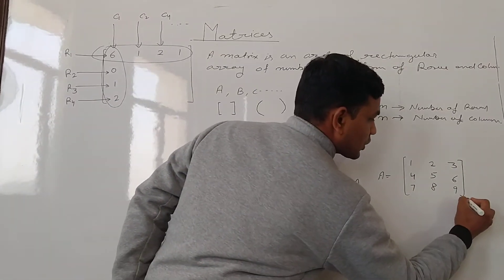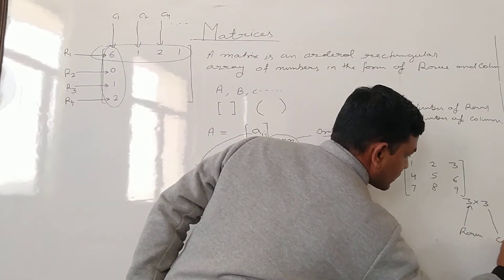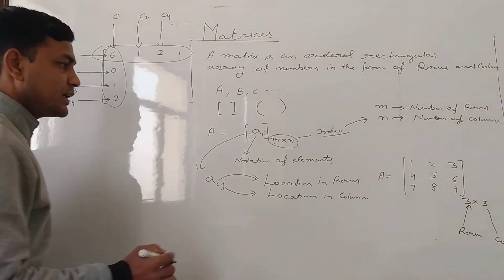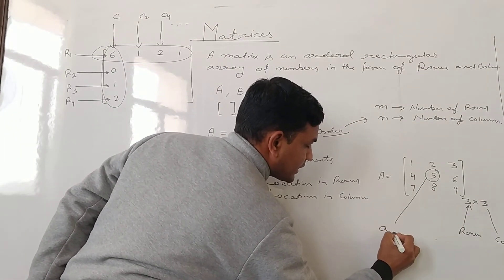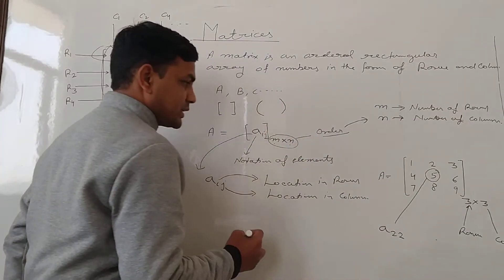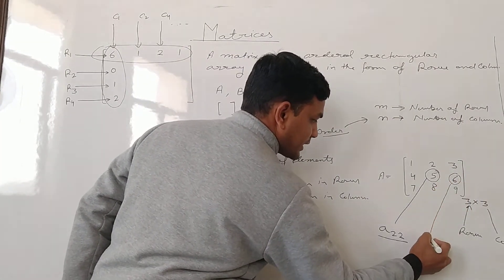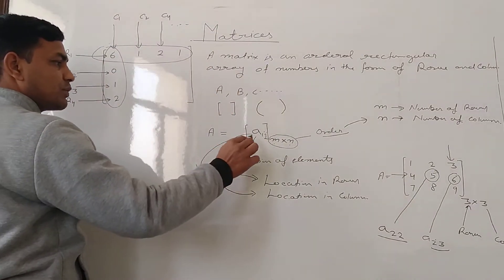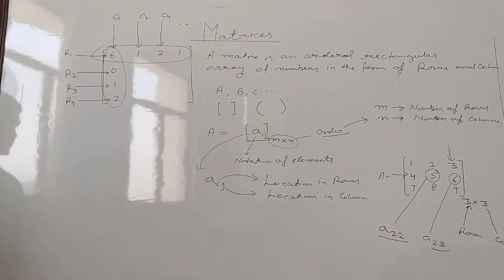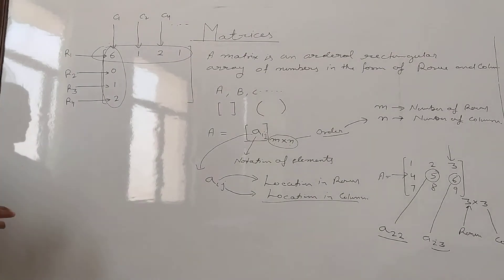For example, the order of this matrix is 3 by 3, meaning it has 3 rows and 3 columns. The location of an element, for example, A-2-2 means the element is situated at the second row and second column. Similarly, A-2-3 refers to the element at the second row and third column. So A-i-j represents the location, where i is the row location and j is the column location.